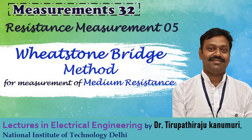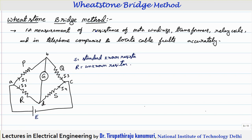Today we are going to discuss the Wheatstone bridge method for measurement of medium resistance. This method is used for measurement of resistances such as motor windings, transformers, relay coils, and they are also used by telephone companies to locate cable faults. This can be used for measurement of these types of resistances more accurately, particularly in the medium range.